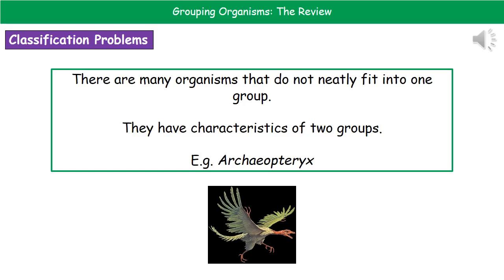The last thing to consider is the problems associated with classification. The biggest problem is that many organisms don't neatly fit into one group — they have characteristics that would place them into two different groups. The best example is Archaeopteryx, an extinct creature, which as you can see from the picture has features from both birds and reptiles, making it quite hard to classify.